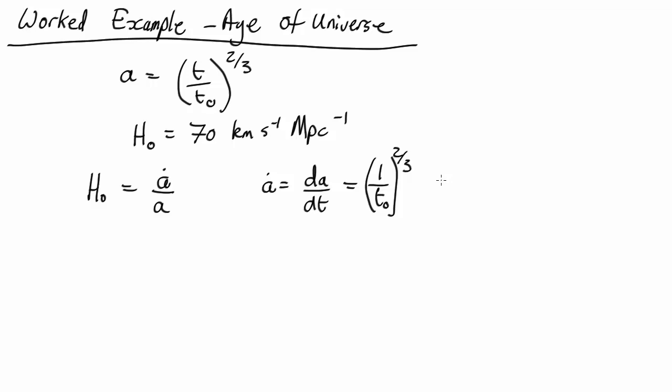When you differentiate anything to some power, you take the index down the front and subtract one off it. So this is equal to two-thirds t to the two-thirds minus one, which is minus a third. So that's ȧ.